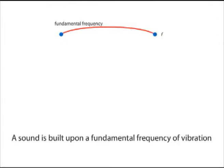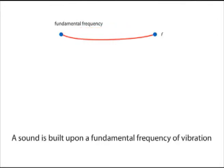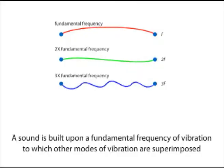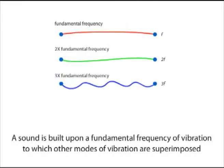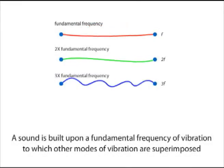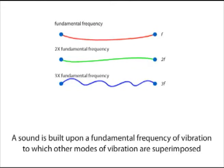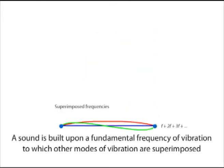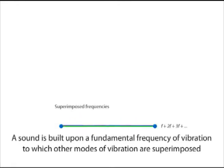These sounds arise because vibrating surfaces, or resonating columns of air, don't vibrate in just one way. In fact, a vibrating string has multiple modes of vibration that all occur simultaneously. Each mode vibrates at multiples of the first mode, and each produces a tone which superimposes on every other. The end result is a sound with a complex architecture.